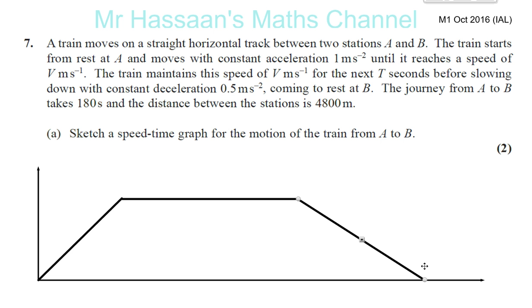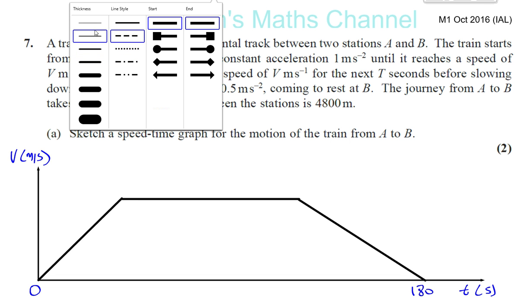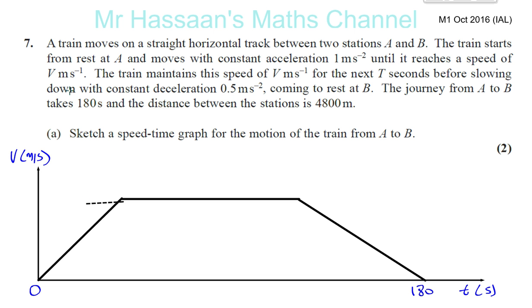So there we have the start of the journey at A and the end of the journey at B. This is zero and this is 180. This is the time in seconds. And this is the speed in m per second. And it reaches a speed of V.